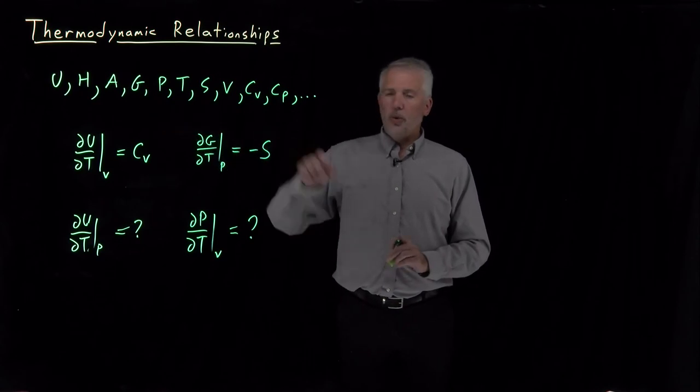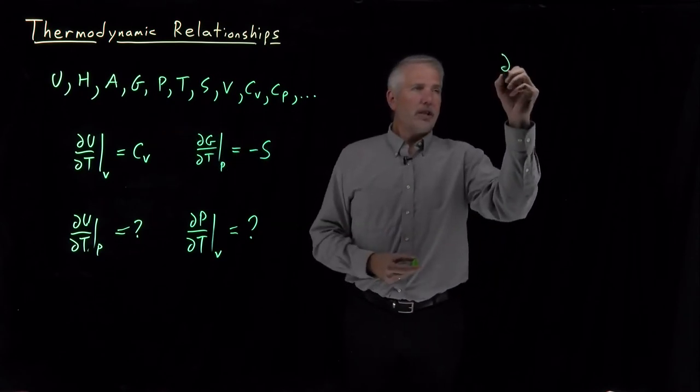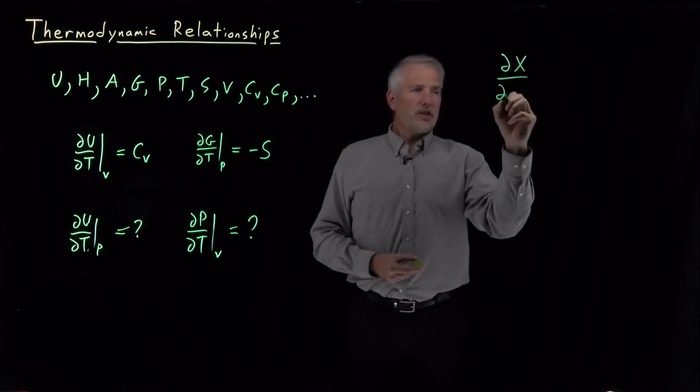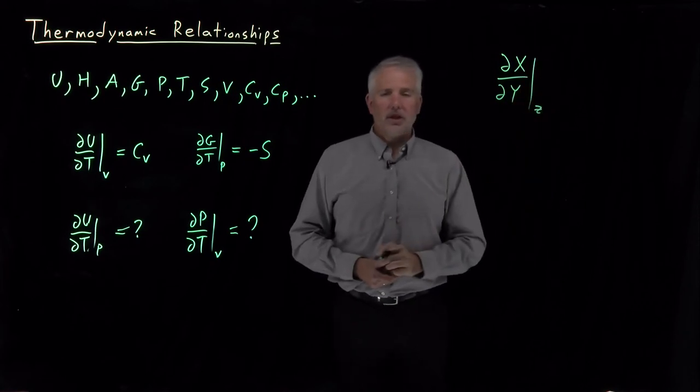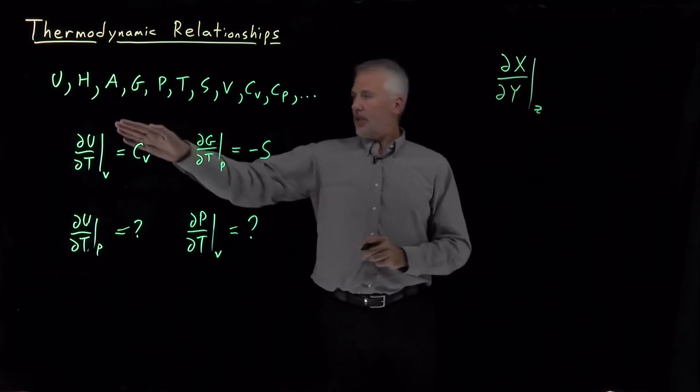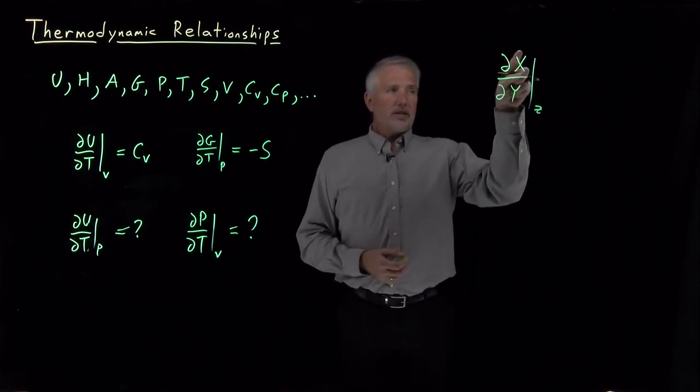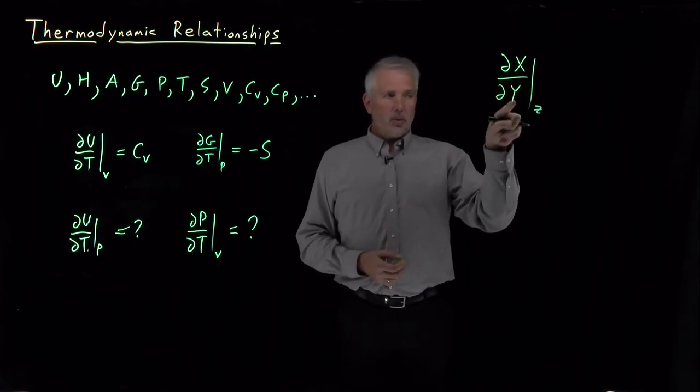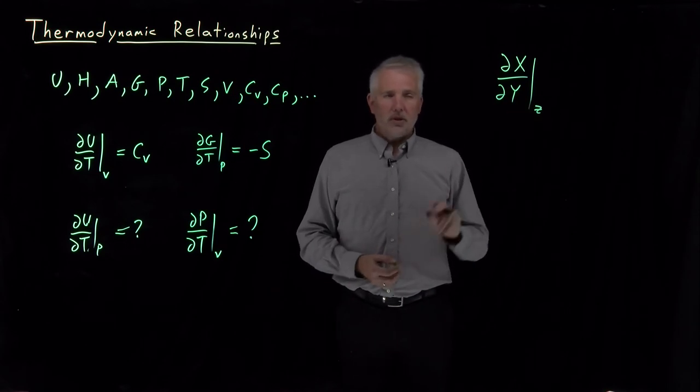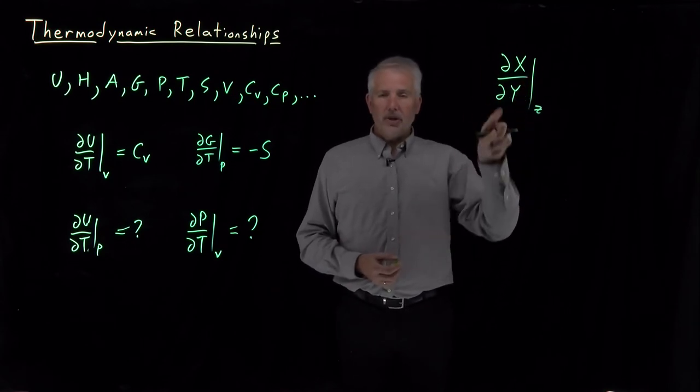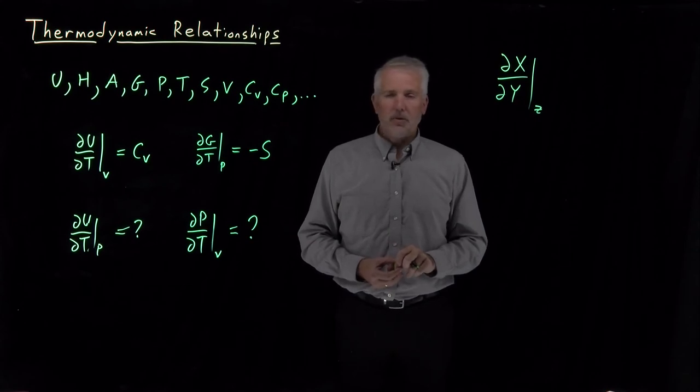But there's clearly going to be quite a few of them. If we ask ourselves how quickly does something change as I modify something else while holding something else constant, even with just the ten variables that we understand so far, that's ten choices for what X could be, or for what Y could be, or for what Z could be. So there's many hundreds of possibilities for these thermodynamic derivatives that might be interesting.